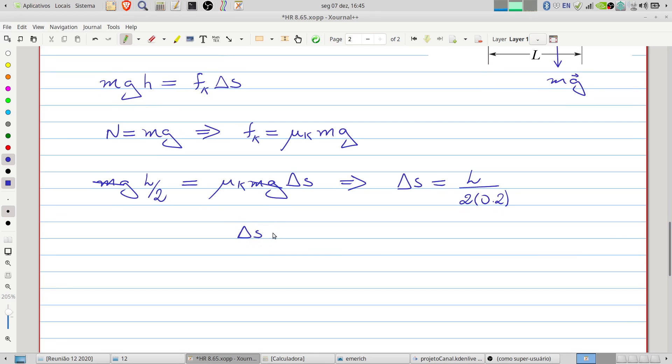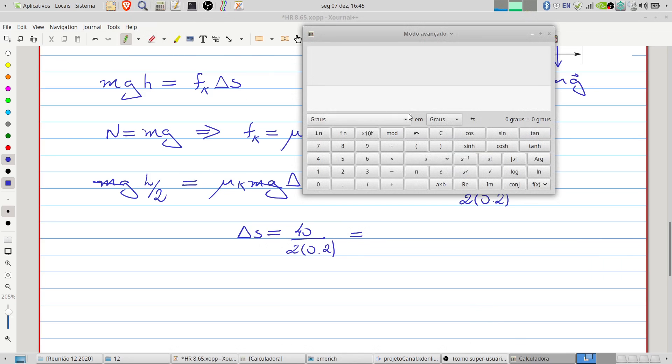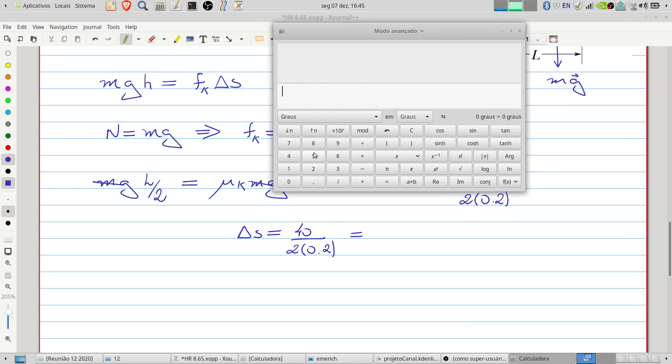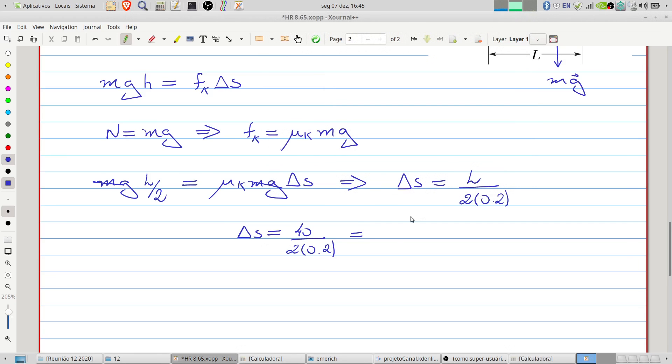This total displacement will be 40 centimeters divided by 2 divided by 0.2. That is—let's do 40 divided by 2 divided by 0.2—100 centimeters.